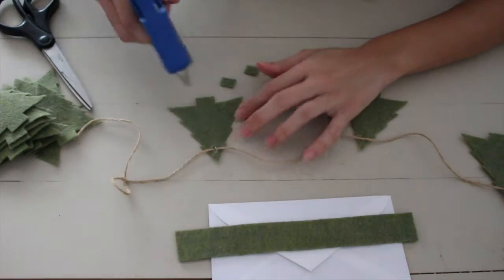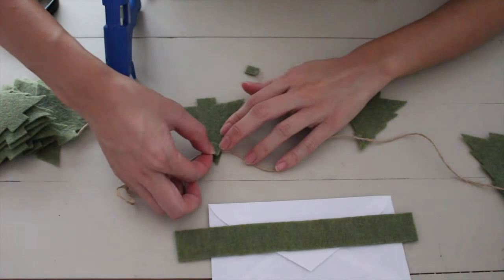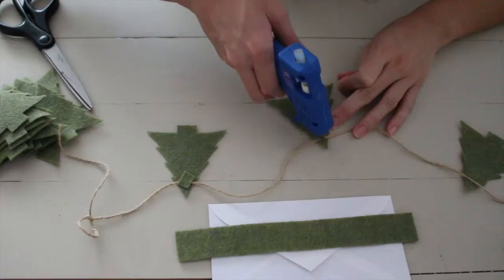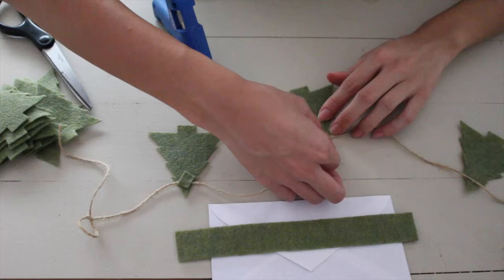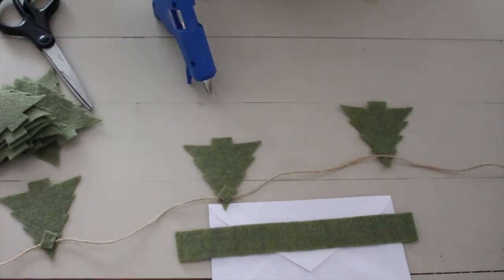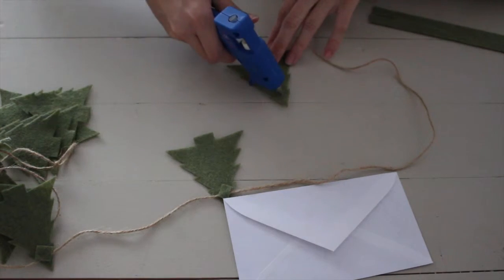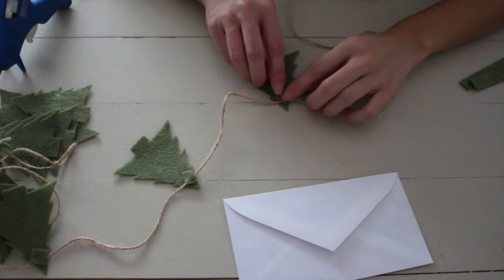I cut little square pieces of felt and glued them over the jute of each tree to make them more stable. Then, I tied loops at the ends.